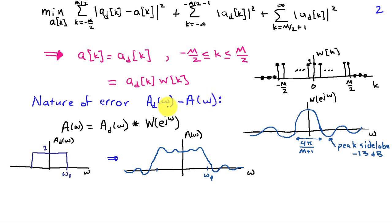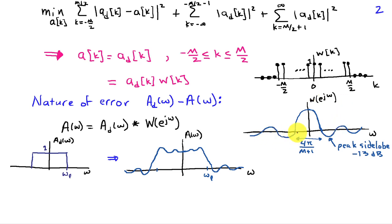Looking at our expression for a[k] as the product of a_d[k] and a window function w[k], we can write A of omega—our actual response—as the desired response convolved with the window function. For the rectangular window that minimizes the mean squared error, the rectangular window has a DTFT characterized by a main lobe of width 4 pi divided by m plus 1, and then oscillations in the side lobes.